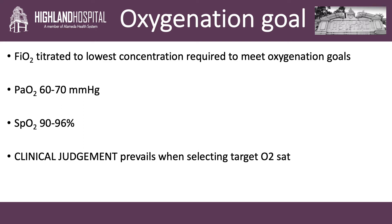Clinical judgment should always prevail when selecting target oxygen saturation for an individual patient. Patients that have coronary artery disease or pulmonary hypertension, for example, may not tolerate hypoxemia as well. In addition, folks that have COPD, ARDS, or some of our post-arrest patients will also have different oxygenation goals. So although we aim for a low-normal normoxia, we should always use our clinical judgment that will ultimately dictate and define what the individual oxygen saturation goals are for particular patients.